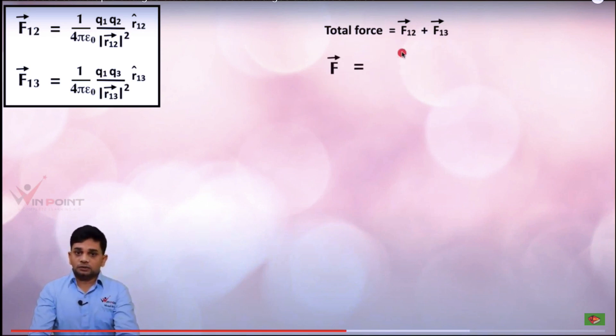So vector f equals what is the equation for this f12? Here we have the equation. So we can write it 1 by 4 pi epsilon 0 q1 q2 by modulus of vector r12 all square into vector r12.